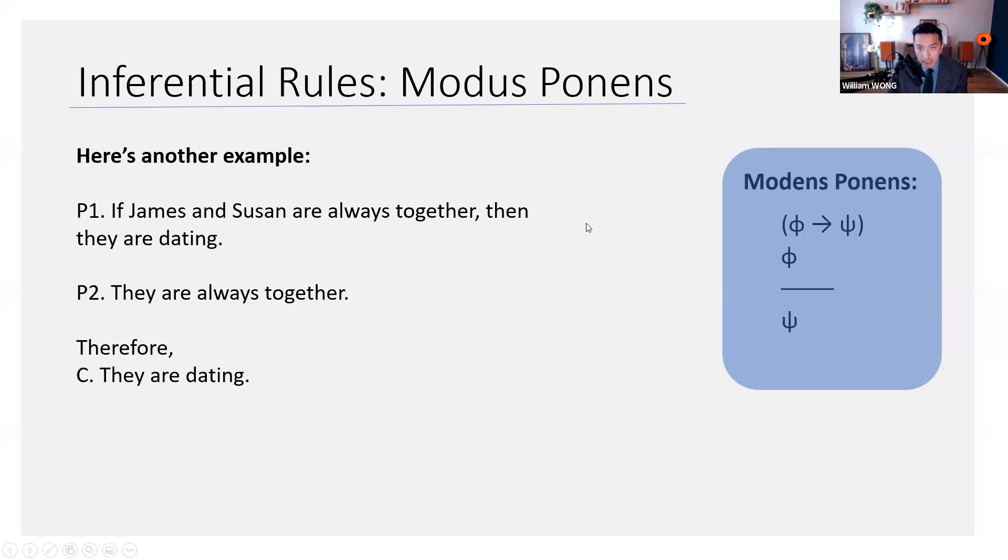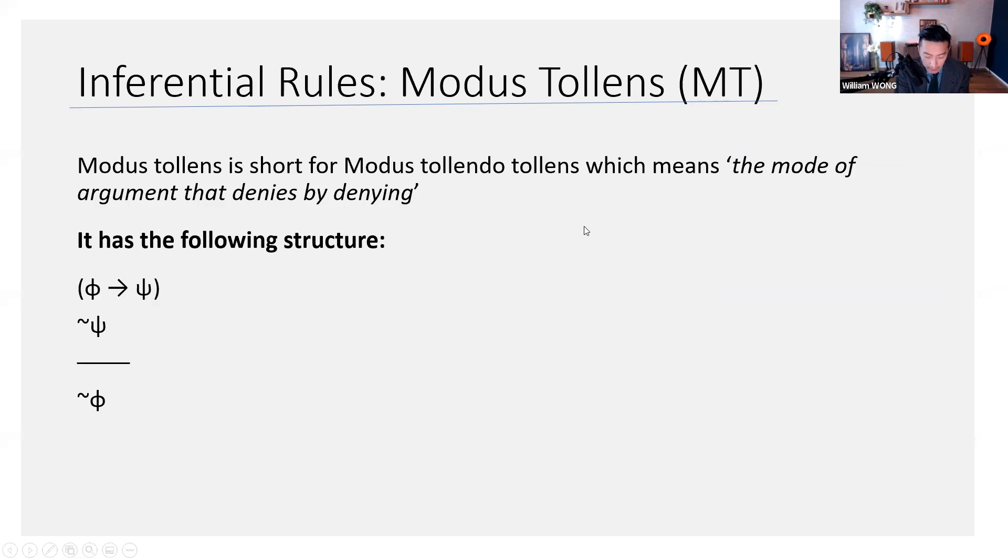Okay, I'm going to skip this because it's overkill. Here is the second inferential rule, modus tollens. It's Latin that means the mode of argument that denies by denying. Modus tollens has the following structure. We also have a conditional as one of our premises. Phi entails psi. However, you say not psi. That is not the consequent. And then you can conclude not the antecedent. This one is slightly less intuitive than modus ponens, but I hope we can still see that it makes very good intuitive sense.